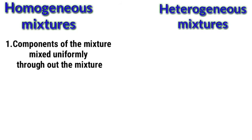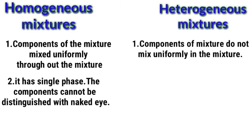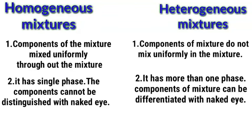Let's show the differences. First point — uniform distribution: in homogeneous mixtures, components are mixed uniformly throughout; in heterogeneous mixtures, components do not mix uniformly. Second point — homogeneous has a single phase, meaning the components cannot be distinguished with the naked eye. Heterogeneous mixtures have more than two phases, and the components of mixtures can be differentiated with the naked eye.